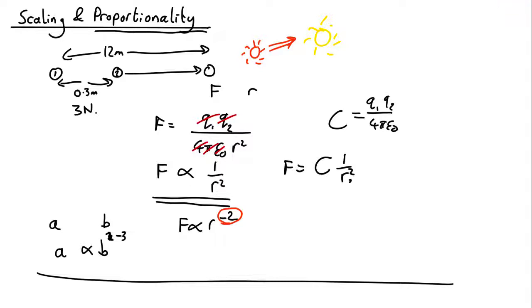Proportionality, if you remember, is telling us if A is what we want to know and B is what it depends on, it's telling us how A depends on B, so it's telling us this power here.